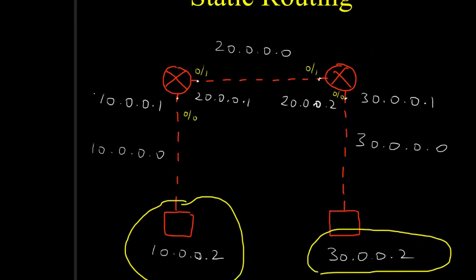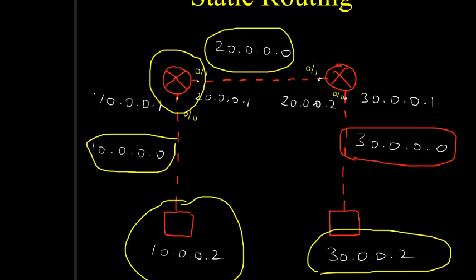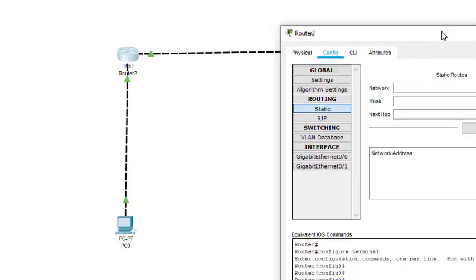Looking at the diagram: this first router is already connected to networks 10.0.0.0 and 20.0.0.0, so it can send packets within those networks. But the network 30.0.0.0 — marked in red — is not reachable for this router; it has no information about it. We need to add this network. The next hop means all packets going to 30.0.0.0 must go through 20.0.0.2 of the second router.